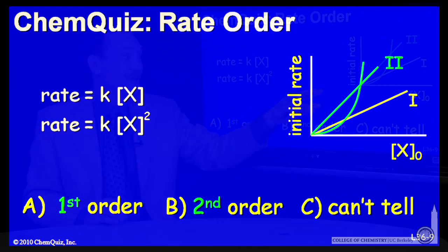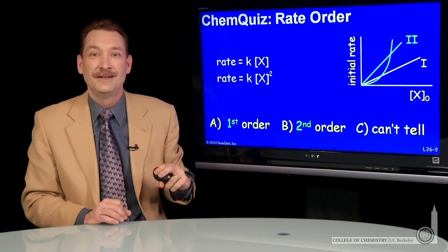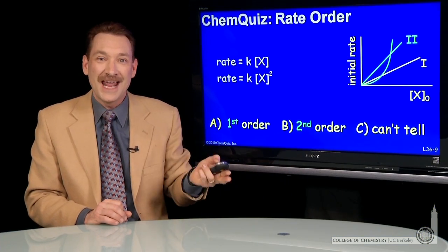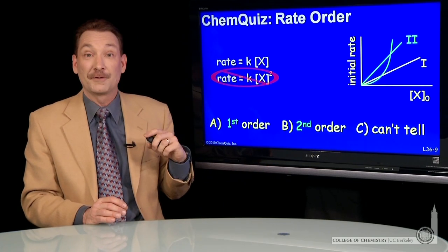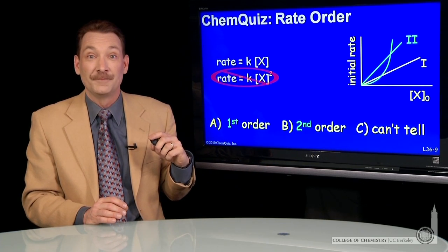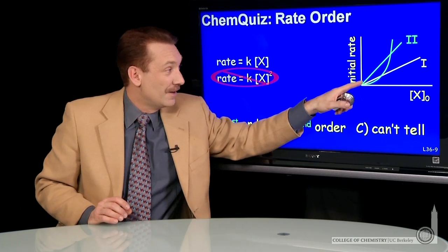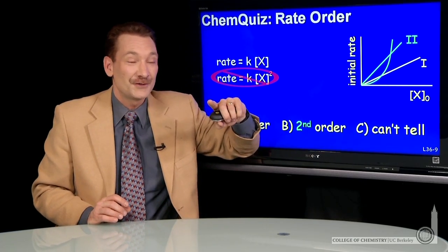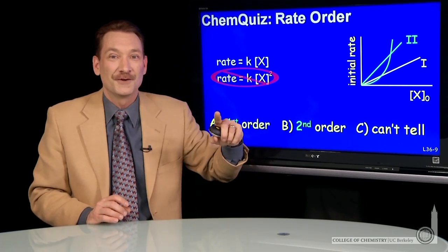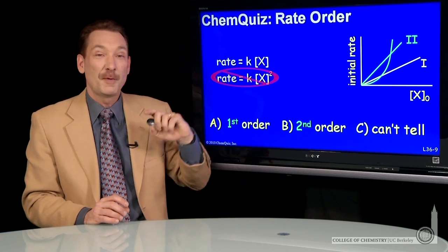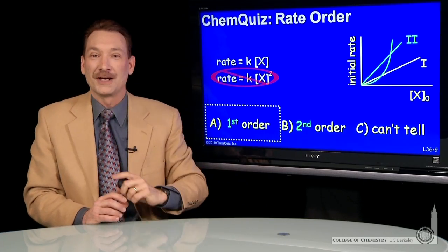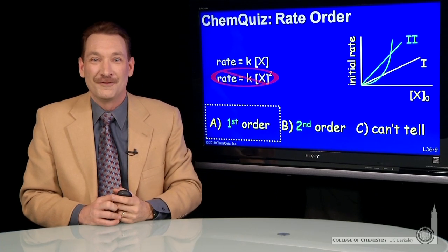So reaction 2 that I've plotted also has a linear relationship, so it can't be second order. It must be first order as well. The quadratic relationship doesn't appear. So if reaction 1 is first order, reaction 2 is first order as well. They're both initial rate directly proportional to the concentration. The correct answer here is A, first order.